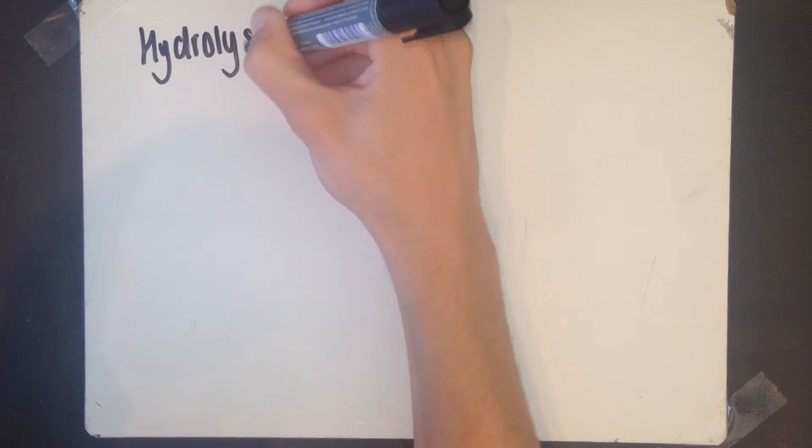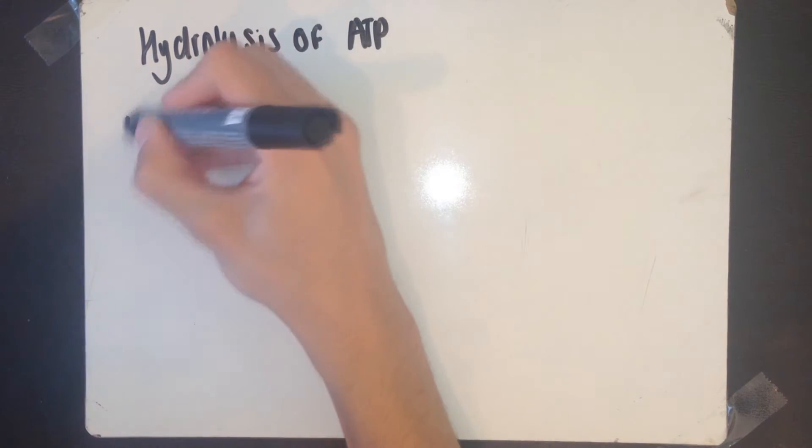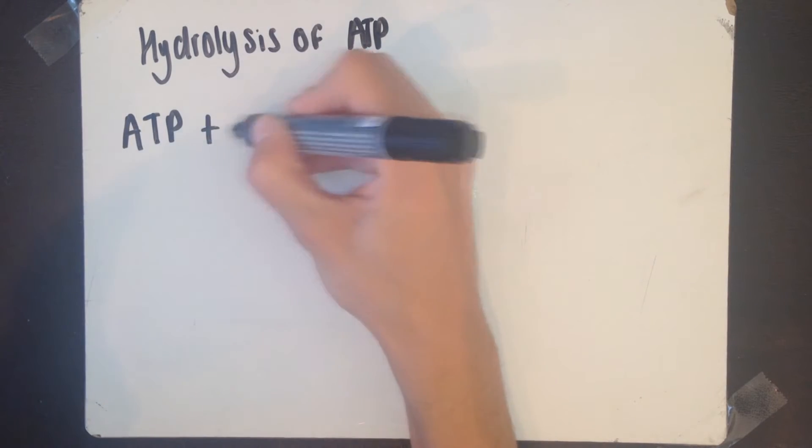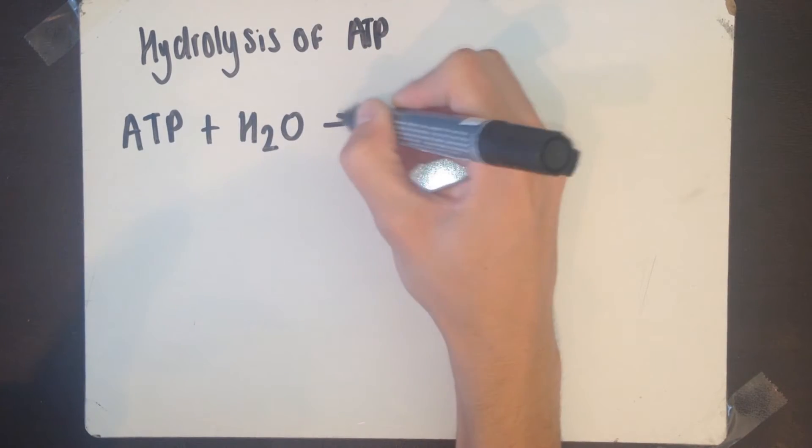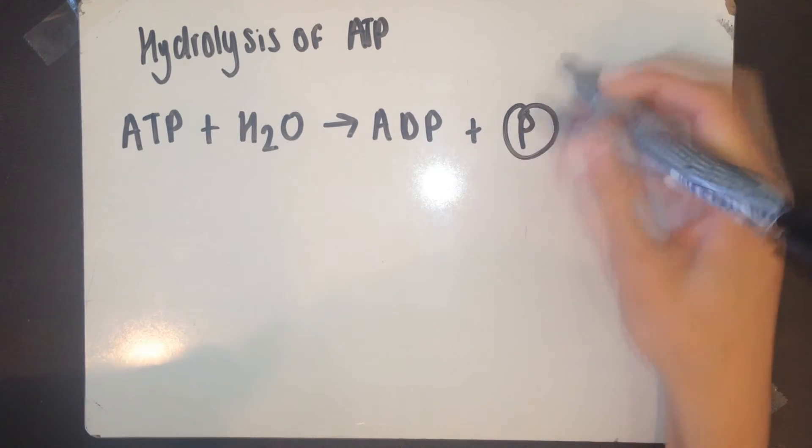Before we start I want to make sure we're clear on the hydrolysis of ATP, adenosine triphosphate. So ATP plus H2O will give you ADP, adenosine diphosphate. This basically means a phosphate group has been removed.